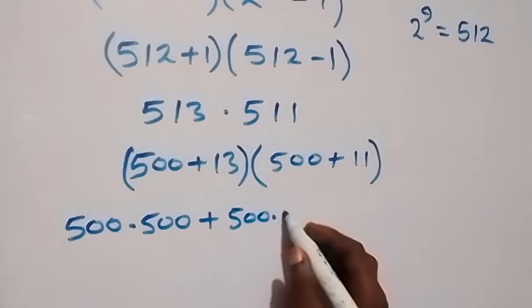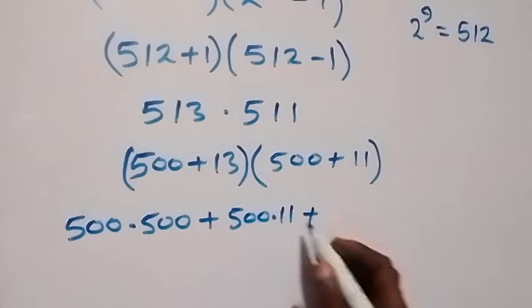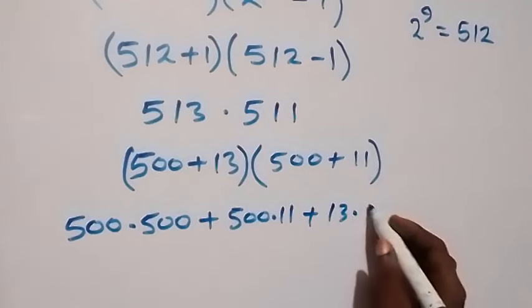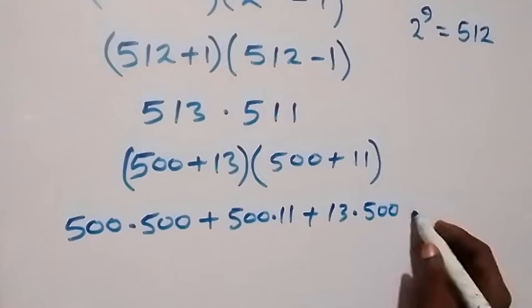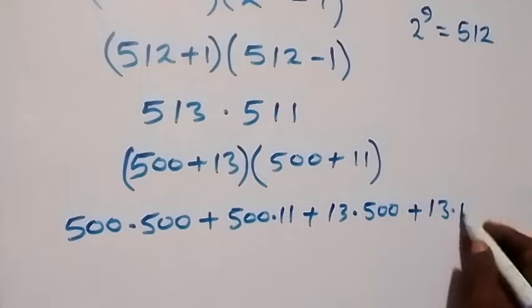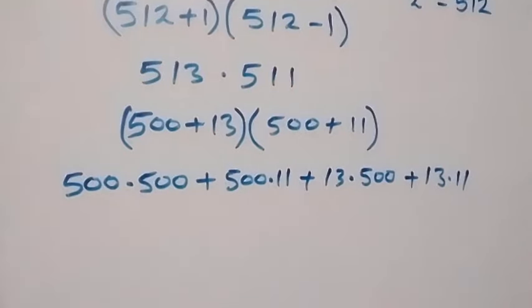Then, also plus here 13 we multiply. We have 13 times 500. Then, plus we have 13 times 11 from here.